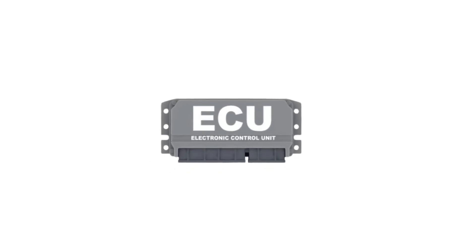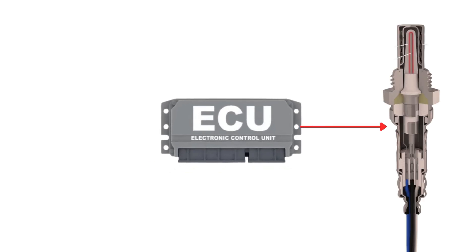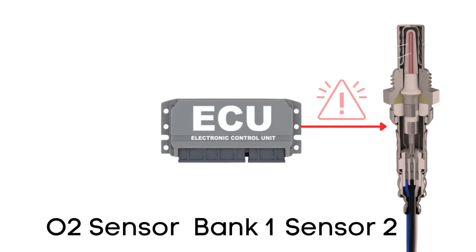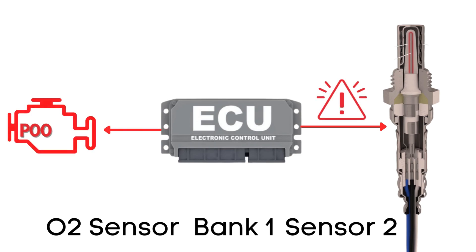The ECU regularly checks the heater circuit in the oxygen sensor to ensure it's functioning correctly. If it finds that the resistance in the heater circuit for bank 1, sensor 2 is out of the specified range, it will trigger the P0054 code.